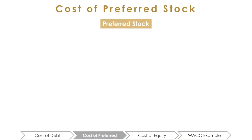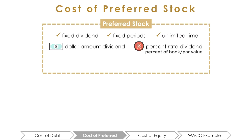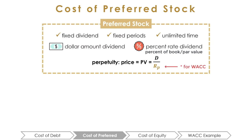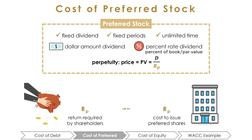Next is the cost of preferred stock. Companies usually promise preferred stock owners a fixed dividend every year for an unlimited amount of time. This fixed payment can be expressed as a dollar amount or as a percentage of the book value of the preferred share. Because the dividends are promised and have no maturity date, we use the perpetuity formula to calculate the cost of preferred stock. Recall that the perpetuity formula is PV = D / RP, where D represents the fixed dividend and RP represents the appropriate discount rate. Notice that this RP is the same rate we want to use in our WACC formula. While RP is the rate of return for the preferred shareholder, it also represents the cost to the firm for issuing these preferred shares.